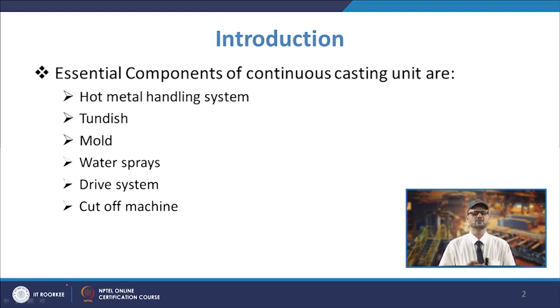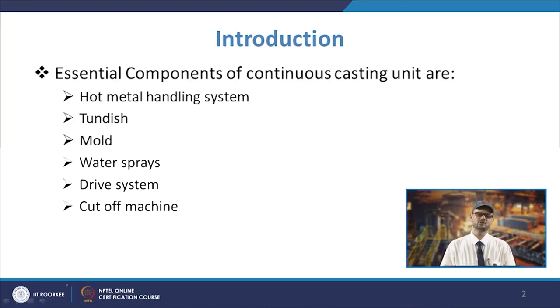All these components make one continuous casting unit. The hot metal handling system starts from the system which handles the hot metal, especially the ladle. From the ladle, the metal is transferred to the tundish and then to the mold. After the mold, there is the spray zone where water spraying is done, then the driving system, and finally cutting with a cut off machine. We will be talking about these systems one by one.